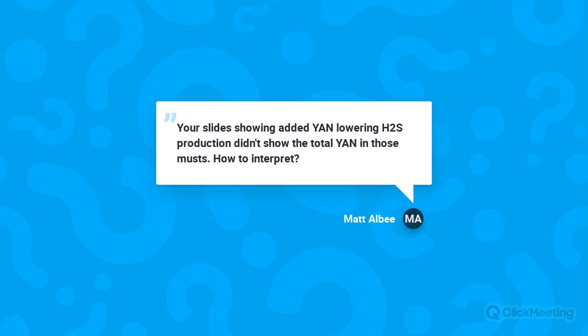Matt LB asks how to interpret the YAN-H2S graph without knowing total YAN in those musts. Simply interpret it as: increasing YAN helps lower H2S levels. It's also important to account for yeast selection, since some yeast strains require more YAN than others. A good general metric is 10 mg/L of YAN for every degree Brix fermented — that's a useful target to help avoid reduction.